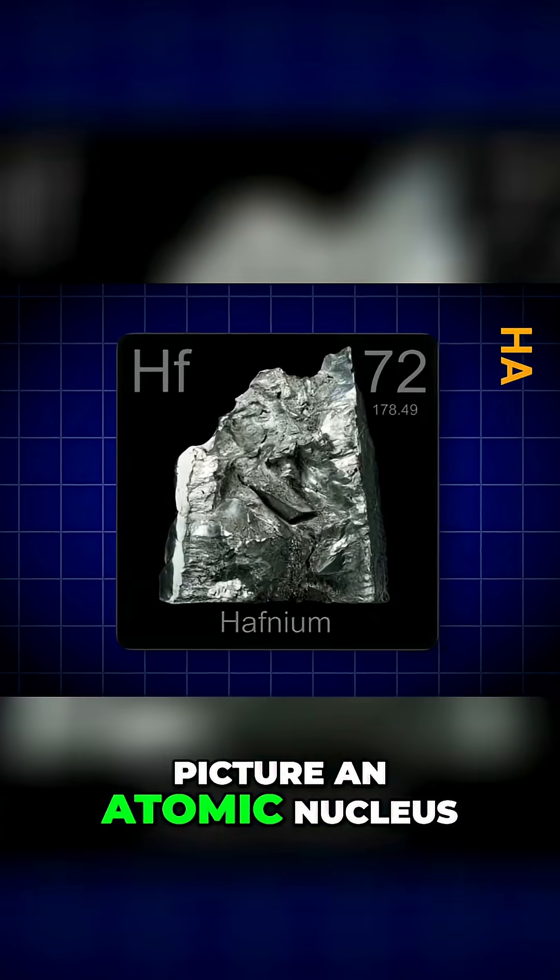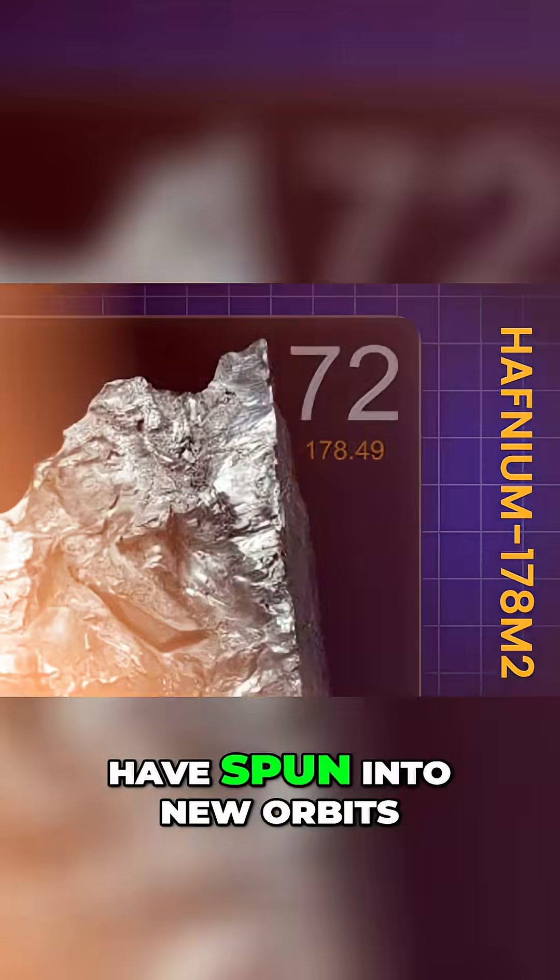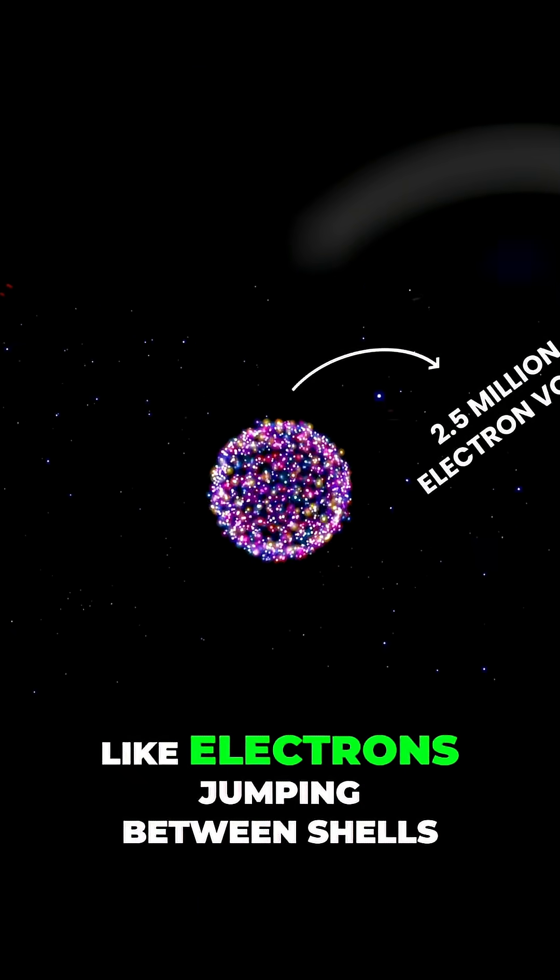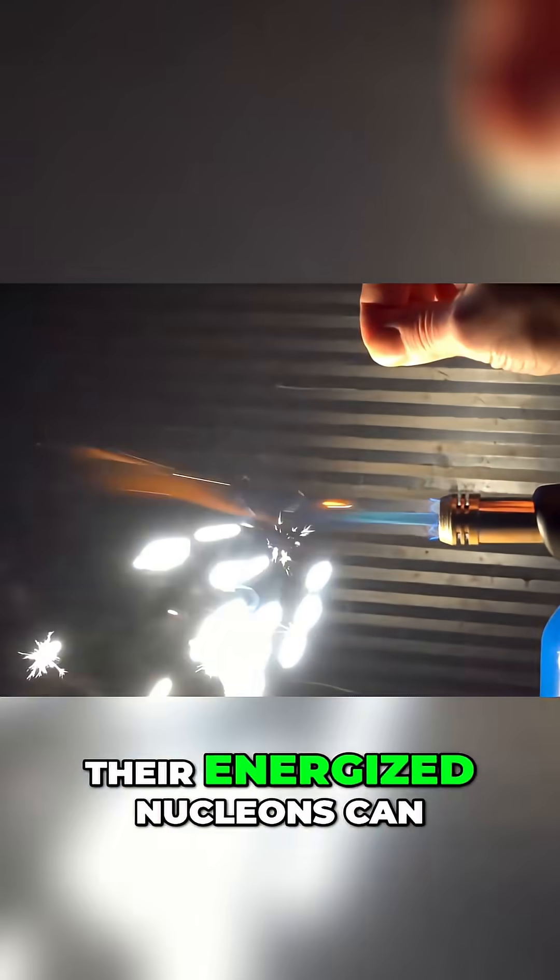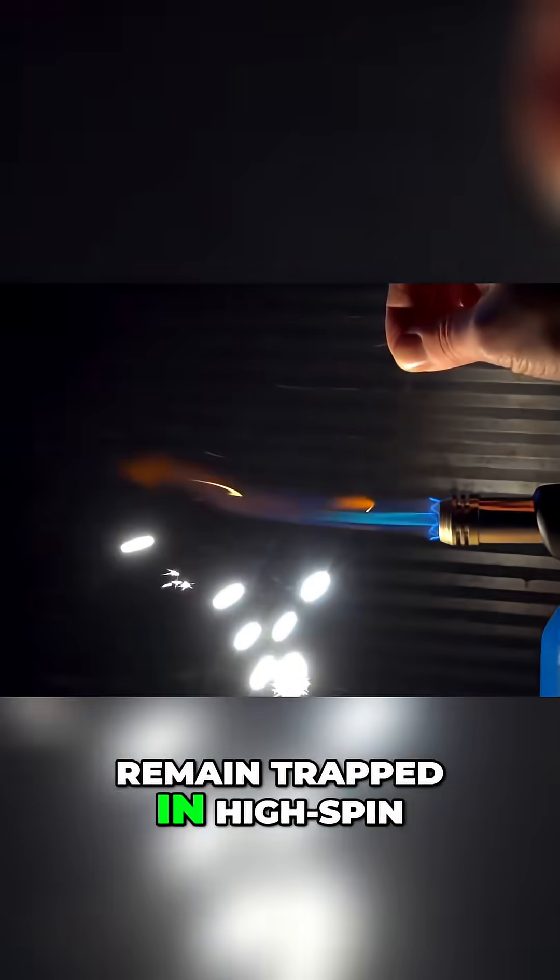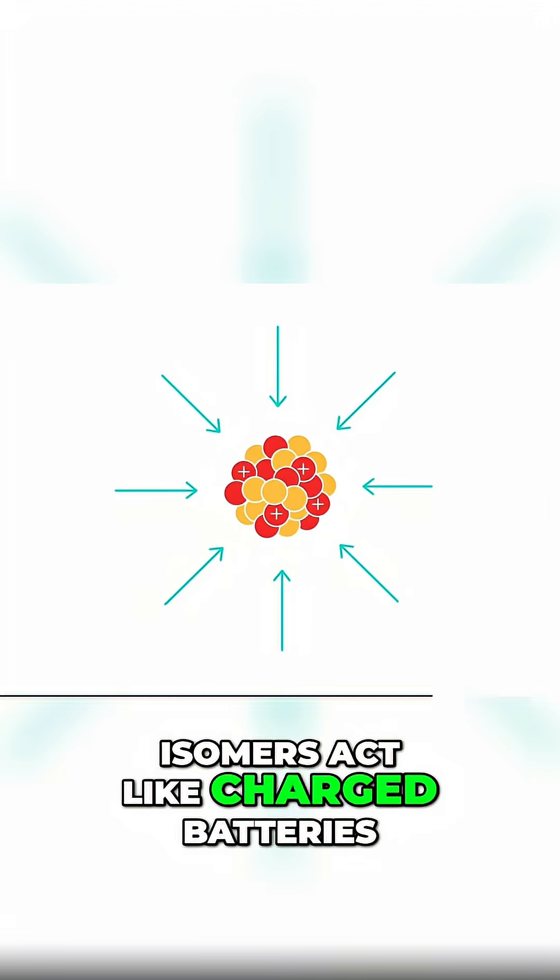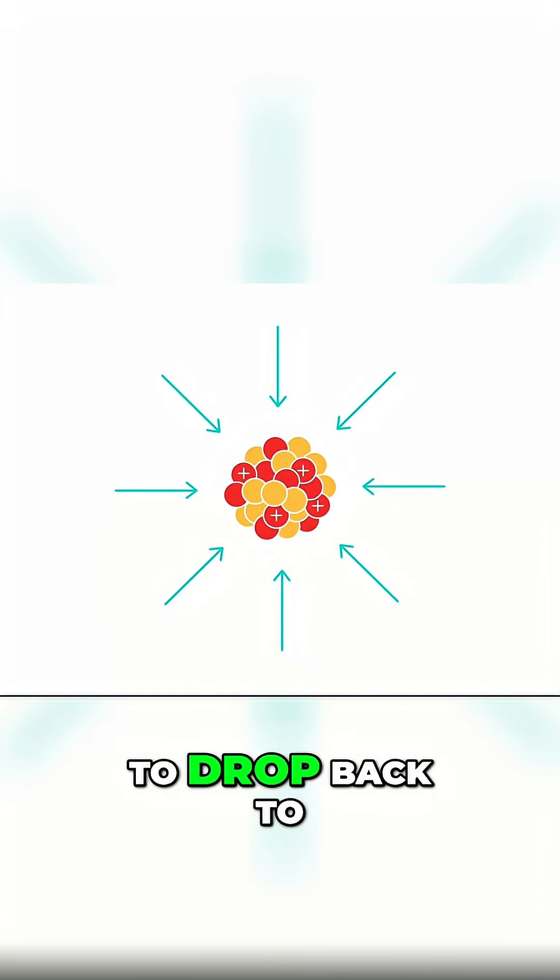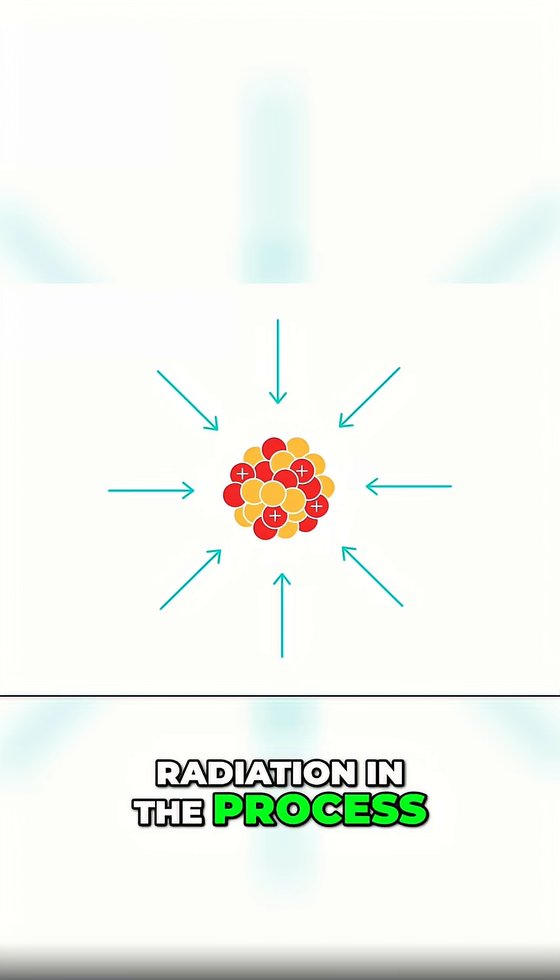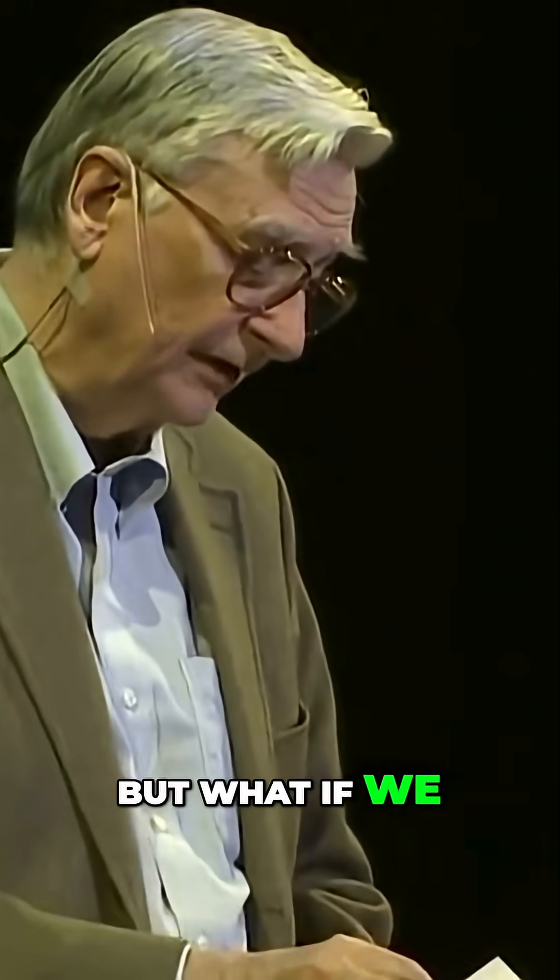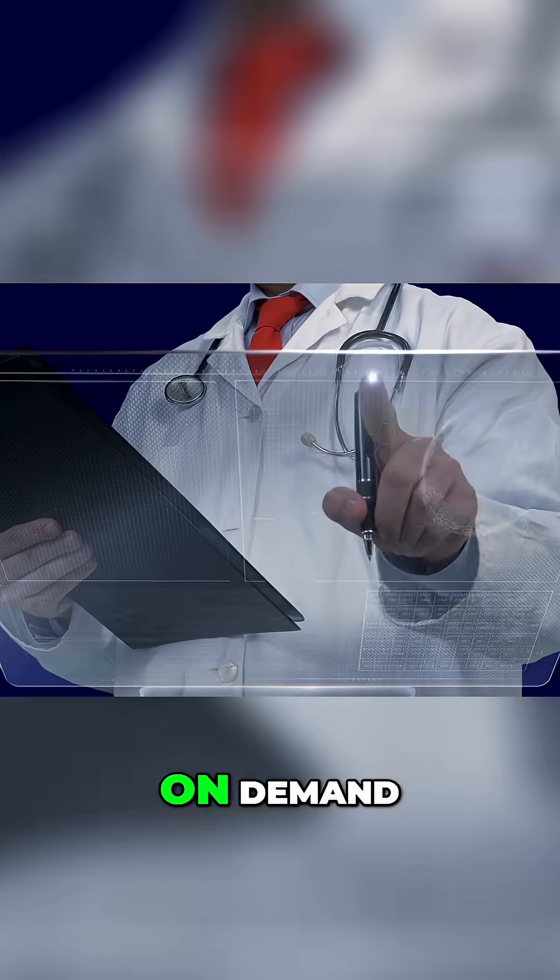Picture an atomic nucleus where neutrons or protons have spun into new orbits, like electrons jumping between shells. These amped-up atoms are nuclear isomers. Their energized nucleons can remain trapped in high-spin states for years. In effect, isomers act like charged batteries where the nucleons want to drop back to their ground state, releasing floods of gamma radiation in the process. But what if we could trigger that cascade on demand?